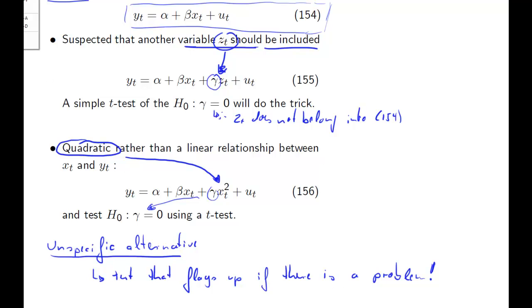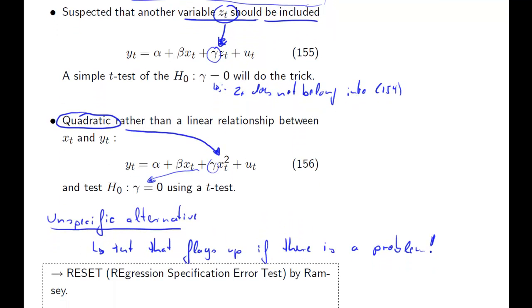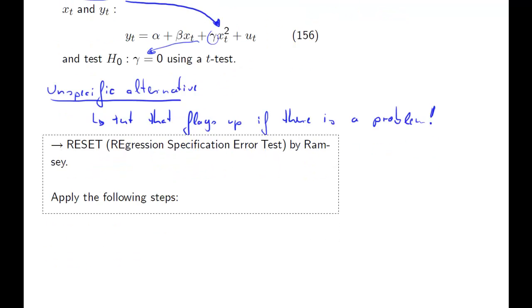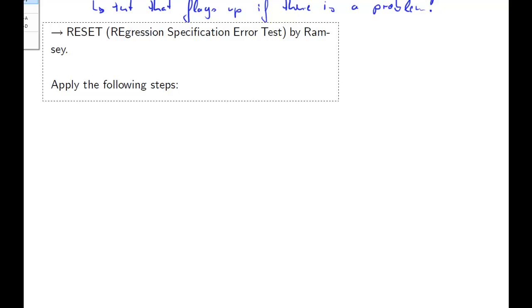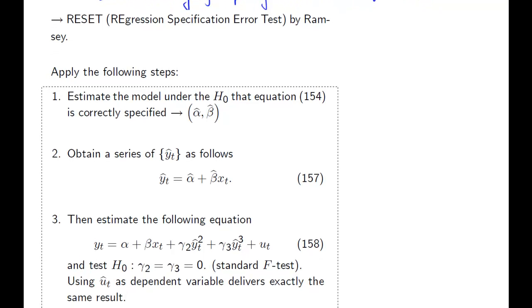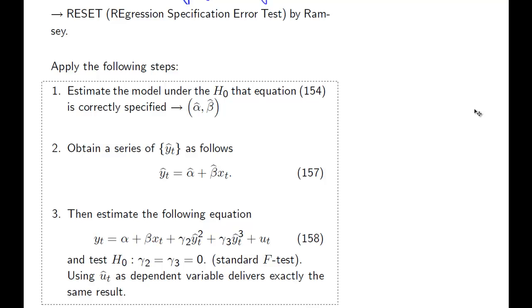So this test is called the RESET test, the Regression Specification Error Test, first introduced by Ramsey, and therefore it's also sometimes called Ramsey's RESET test. So here are the steps. Again, it's a three-step procedure as usual in auxiliary regressions. The first step, the first thing we do is just as usual, we estimate our linear model that was in equation 154, that's our linear model, and we get parameter estimates alpha hat and beta hat.